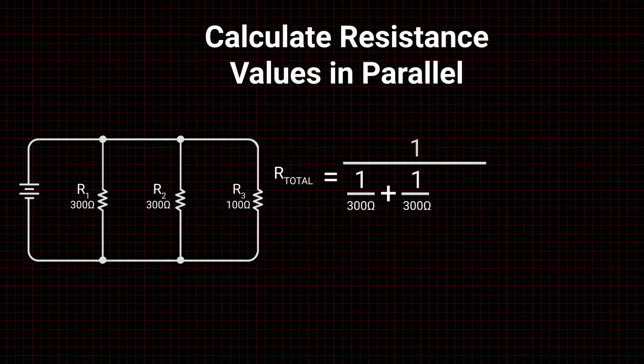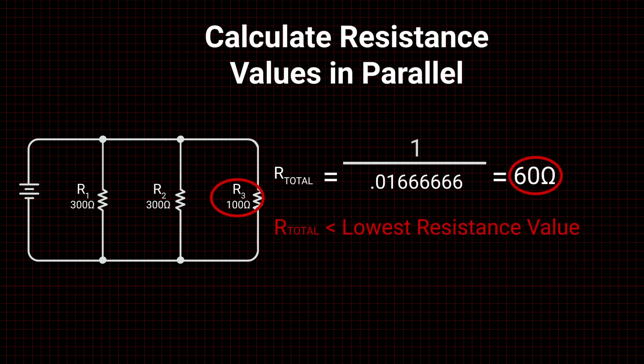In parallel resistor circuits, as more resistors are added, the value will continue to decrease and the total resistance will always be less than the parallel branch with the lowest value within the circuit.